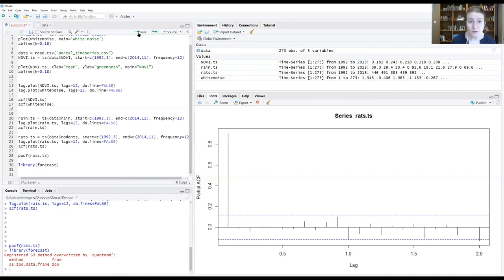The function we're going to use from the forecast library is called tsdisplay. And let's go ahead and give it the rats time series object. Let me tag this forecast package so everybody knows where that's coming from. And then maybe spell it correctly.